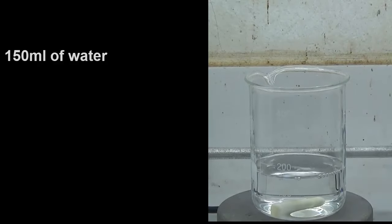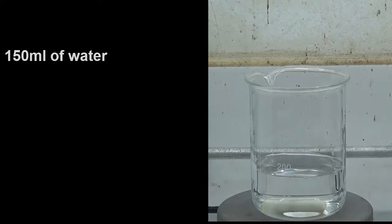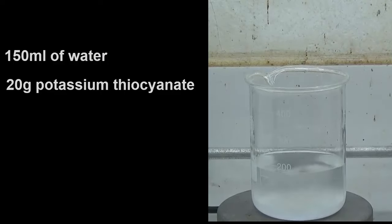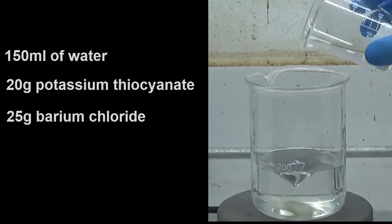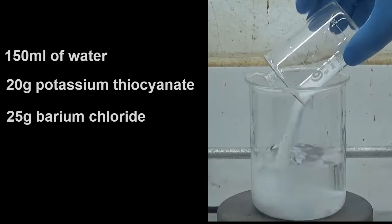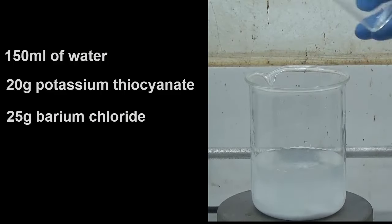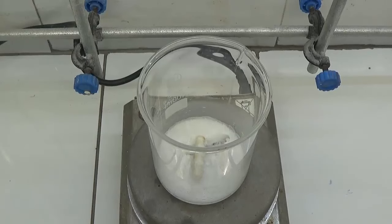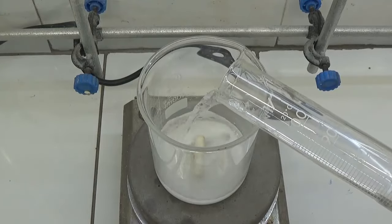To get barium thiocyanate, dissolve in 150 milliliters of water 20 grams of potassium thiocyanate and 25 grams of barium chloride. Boil the solution and evaporate all the water in a 60 degree Celsius oven. After the result has dried, dilute with 100 milliliters of ethanol.